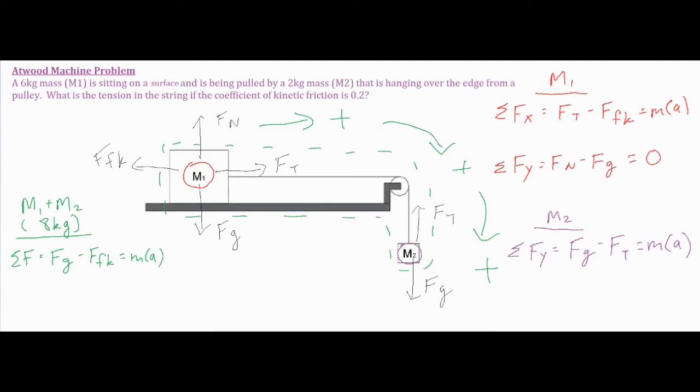I have my formulas set up for each of my individual masses, which I color coded in purple for M2 and red for M1, and then I also have the sum of forces for the entire system treated like one big eight kilogram block. Our M1 would be sort of typical of how we would set up our sum of forces. We have FT that's pulling it to the right, Ffk would be our negative direction, that equals M times A, and then normal force minus force of gravity equals zero because there is no vertical movement or acceleration.